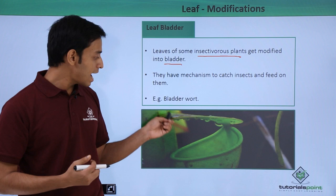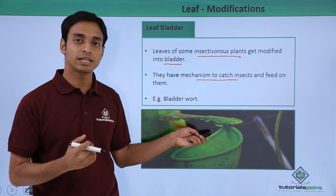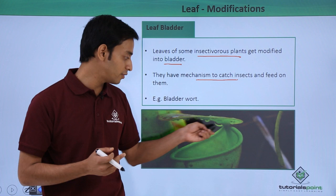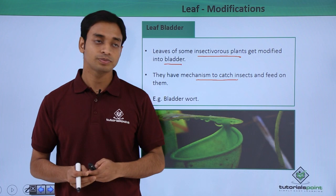These bladder structures have very interesting mechanisms to catch insects. Whenever an insect comes and sits on the surface of this bladder, it can sense it — it is very sensitive — and the lid gets closed. Once the lid is closed, digestive enzymes are secreted inside the surface of the bladder and they can digest the insects. A very common example is known as the bladderwort.